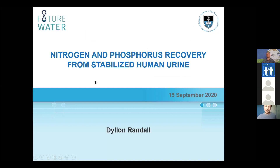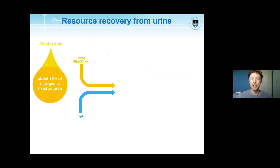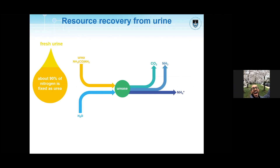Thanks for that introduction. When we look at resource recovery from urine, we realize that about 90% of the urine is made up of nitrogen, which is fixed as urea. This urea degrades in the presence of an enzyme called urease to produce CO₂ or carbonate ions, and ammonia or ammonium,